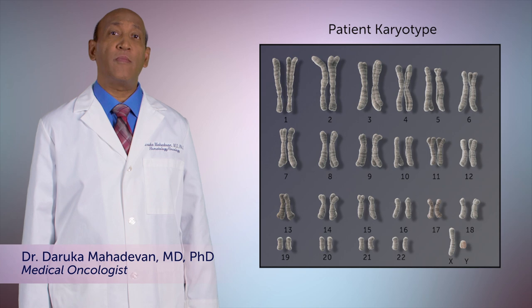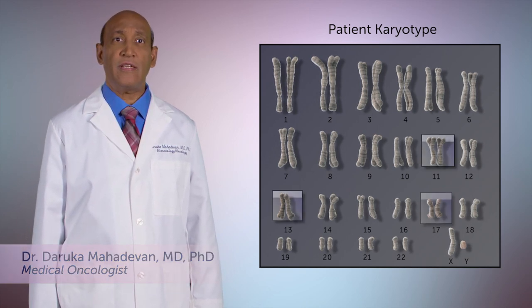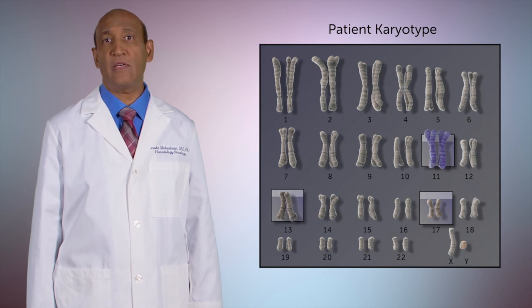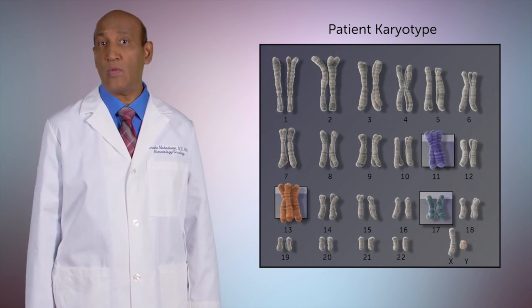Of the common changes seen in CLL, three particular deletions occurring in chromosome regions 11q, 13q, and 17p may correlate with a better or worse prognosis.